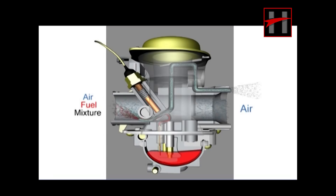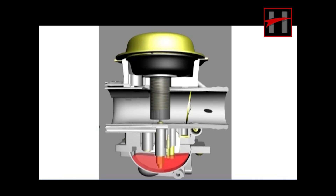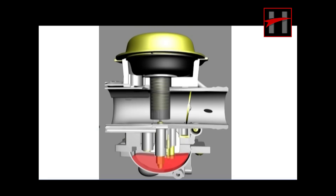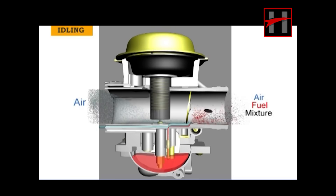The pilot circuit provides the air-fuel mixture at idling, slow, and medium speed. The pilot circuit consists of the following parts: piston valve, butterfly slide, pilot air passage, and pilot jet. When the engine is idling, air enters the pilot circuit through the pilot air jet located in the pilot air passage, and fuel is fed to the mixing chamber through the pilot jet. From the mixing chamber, the air-fuel mixture is sucked into the engine mainly through the pilot outlet and supplemented by the bypass ports.